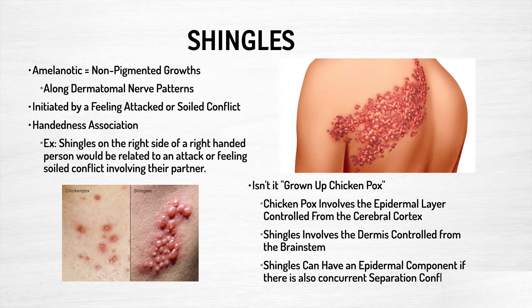Shingles themselves are amelanotic melanomas — they're non-pigmented. So instead of the pigment cells proliferating, these do not have that dark pigment. This is again initiated by a feeling of being attacked or feeling soiled, and there is that handedness correlation. Shingles break out in people that have had some type of issue — it could be with a partner — and so the shingles will follow that right-hand, left-hand pattern.